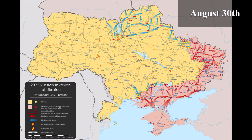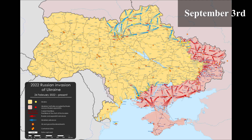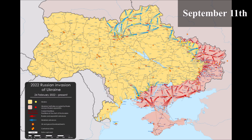The third phase covers the period from August 29, 2022, when Ukraine's Kherson counteroffensive started, to November 11, 2022, when Ukrainian troops retook Kherson.